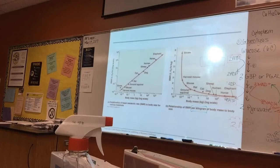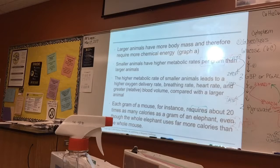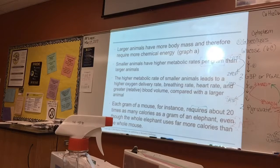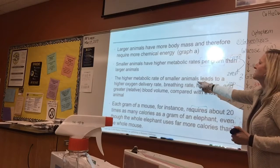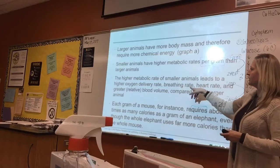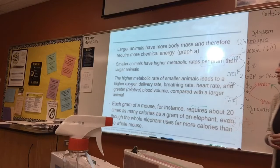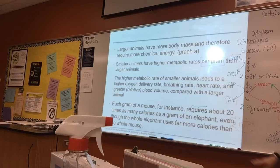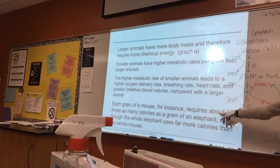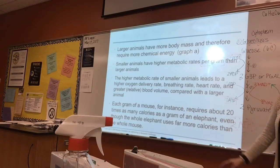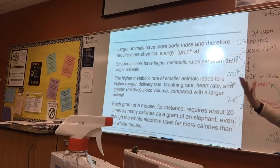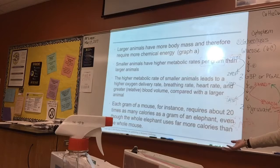Larger animals have more body mass and therefore require more total chemical energy. But smaller animals have higher metabolic rates per gram than larger animals. That higher metabolic rate in smaller animals leads to a higher oxygen delivery rate, higher breathing rate, higher heart rate, and usually greater blood volume compared to a larger animal. For example, each gram of mouse tissue requires about 20 times as many calories as a gram of elephant tissue, even though the whole elephant uses far more calories overall.